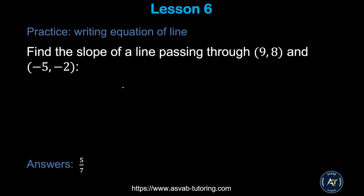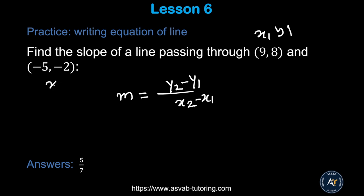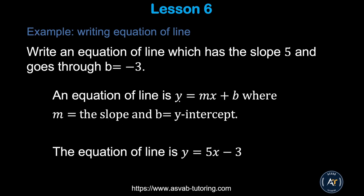Now try it yourself using the formula m = (y2 − y1) / (x2 − x1). Label the points x1, y1, x2, y2, plug in the values, simplify, and make sure you get the correct answer.